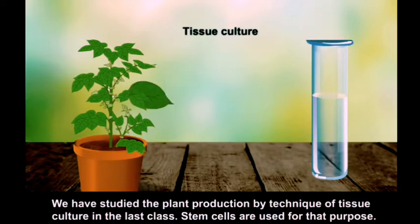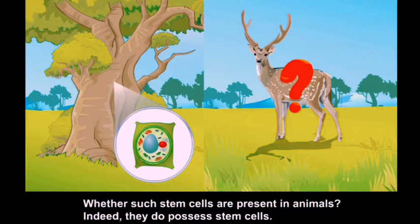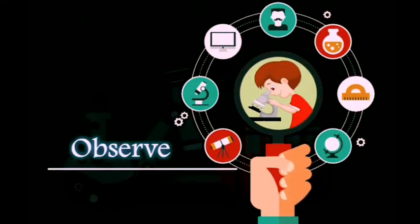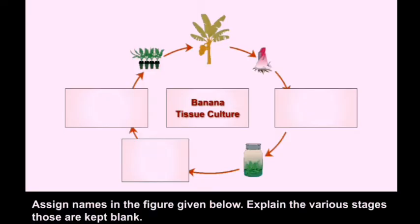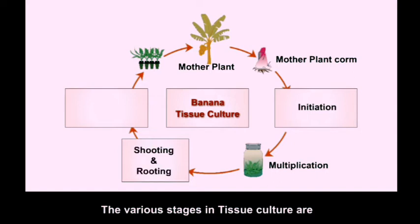In plant tissue culture, plant production is done by the technique of tissue culture using stem cells. Such stem cells are indeed present in animals too. The stages in banana tissue culture are: mother plant, initiation, multiplication, shooting and rooting, primary hardening, and secondary hardening.